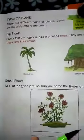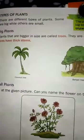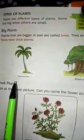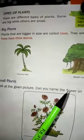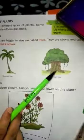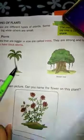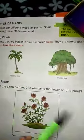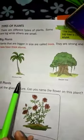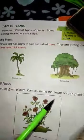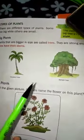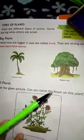Now the types of plants. Some plants are small, some plants are big also. Big plants — plants bigger in size are called trees. That means the plants bigger in size are called trees. They are strong, tall, and trees have thick stems. Like coconut tree, banyan tree, then mango tree. This type of plants have thick stems, and they are strong and tall.